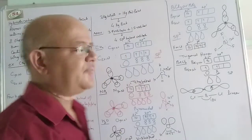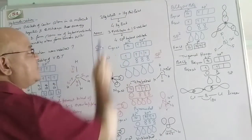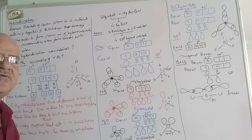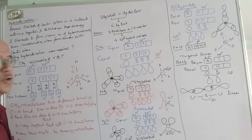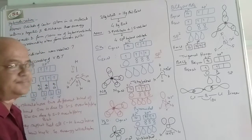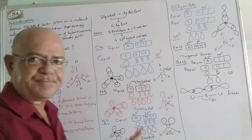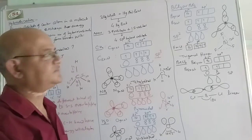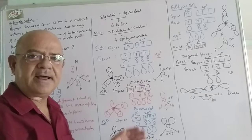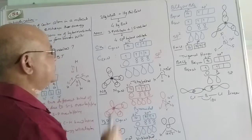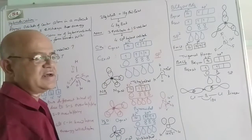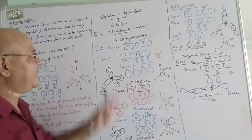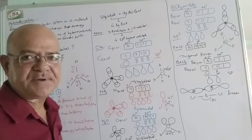It is just like: suppose 3 kg of white paint is mixed with 1 kg of red paint — a total of 4 kg of pink paint is obtained, and this 4 kg of pink paint will be the same in all characters. This concept can be applied to orbitals: suppose 3 p-orbitals and 1 s-orbital combine together, then 4 sp³ orbitals will form.